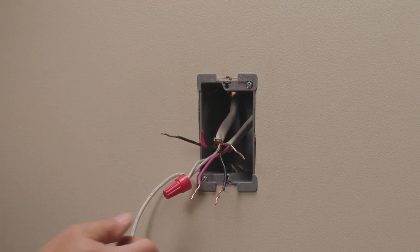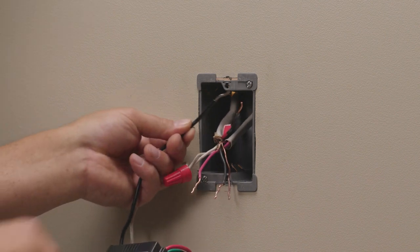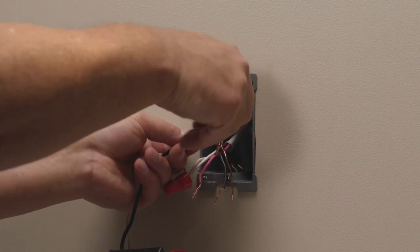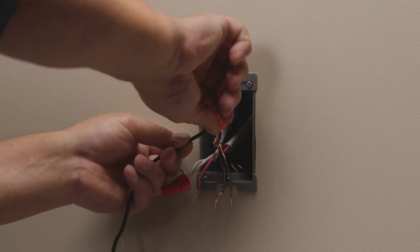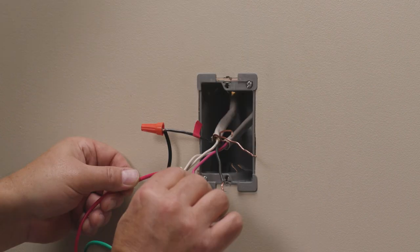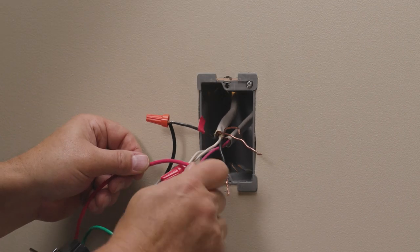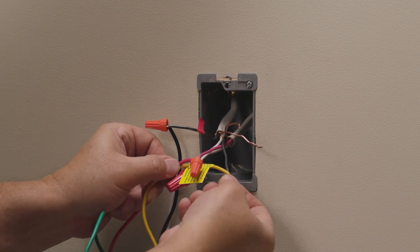Next, connect the wire that was attached to the black screw on the old three-way switch to the black wire on the smart switch. Next, connect the yellow and red wires from the smart switch to the traveler wires from the three-way switch.